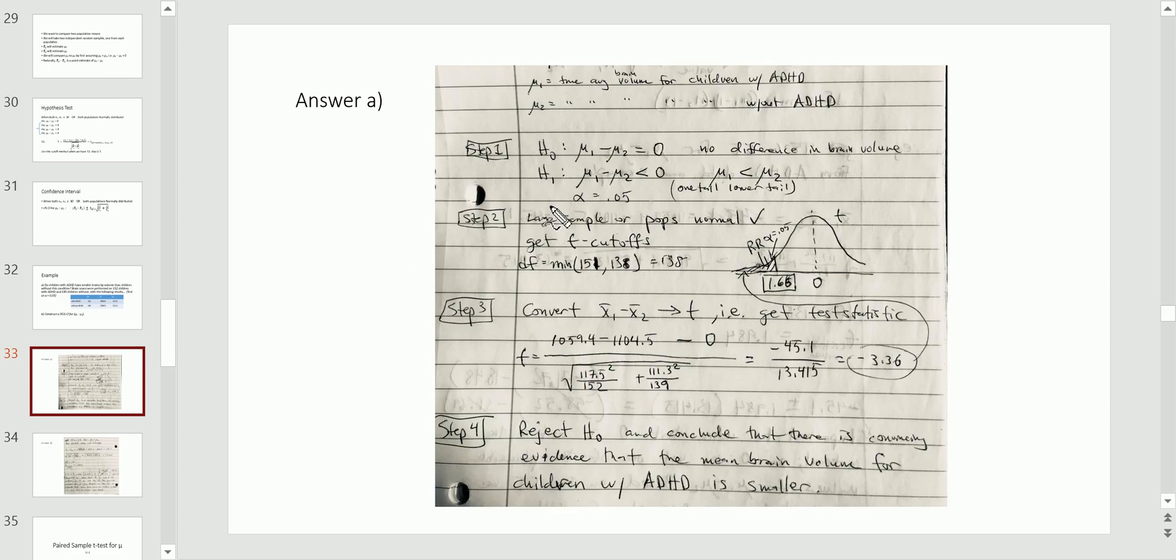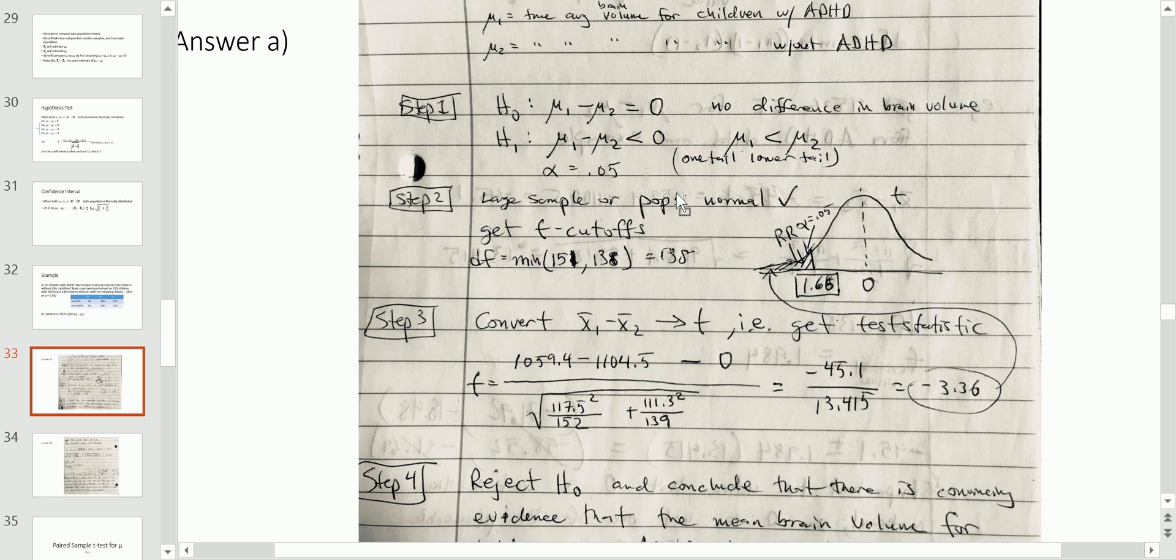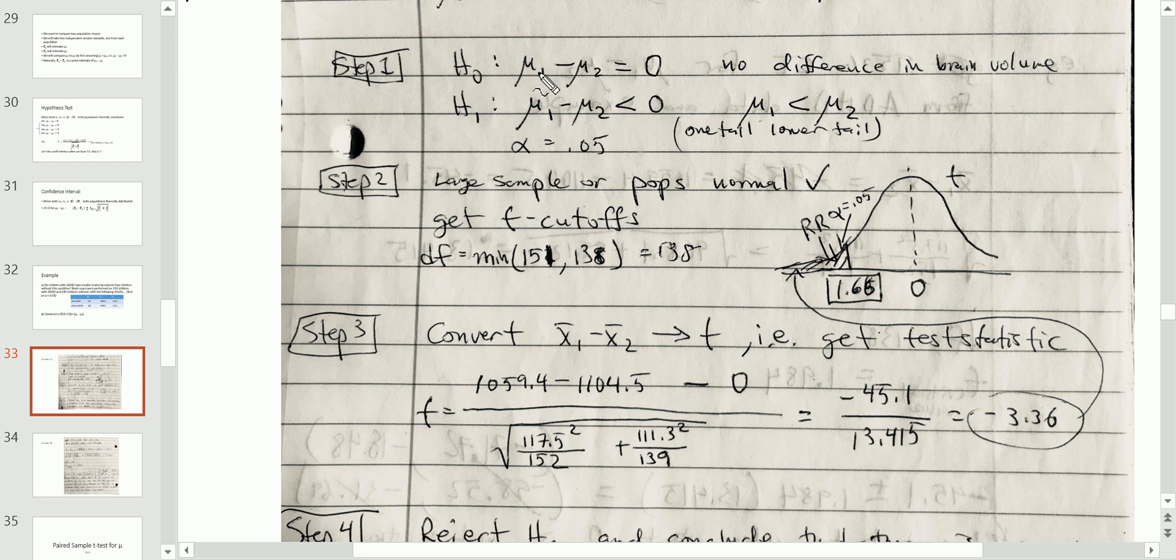Here's the work. So, step one. I'm going to zoom in a little bit here. Step one. State the hypothesis test. You see the alternative is exactly what we talked about in the previous slide. Alpha 0.05. We check the large sample condition. Check. Both sample sizes are well above 30.